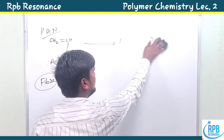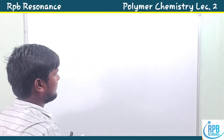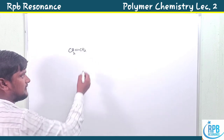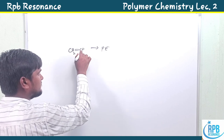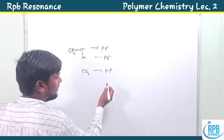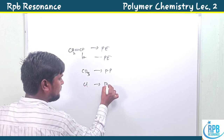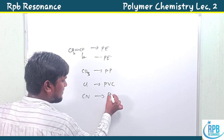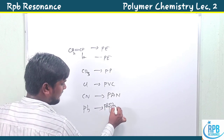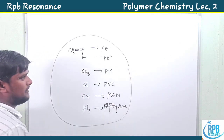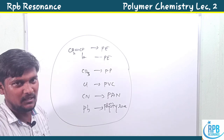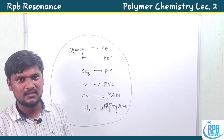That's all for this video. To summarize the vinyl polymers: CH₂=CH₂ gives polythene (H substituent); replacing H with methyl gives polypropylene; with chlorine gives PVC; with CN gives PAN; with phenyl gives polystyrene. These are the vinyl polymers in our polymer chemistry series. In the next video, I'll upload another class of polymers. Thank you so much for watching.